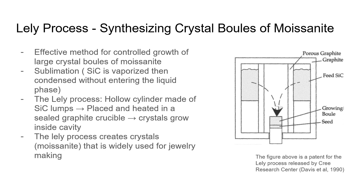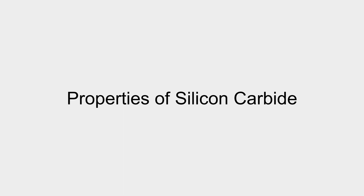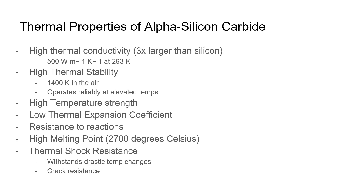The picture on the right is the patent for this process. Thermal properties of alpha silicon carbide: alpha silicon carbide is an industrial choice because of its thermal properties, such as high thermal conductivity, high thermal stability, high temperature strength, low thermal expansion coefficient, resistance to reactions, high melting point, and thermal shock resistance. This makes it a great choice for operating at elevated temperatures and withstanding drastic temperature changes without cracking.